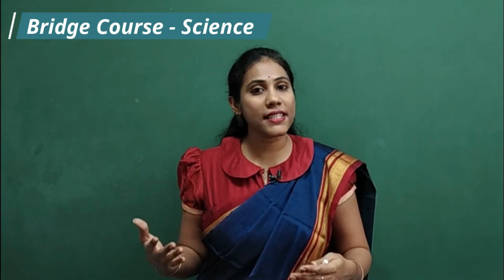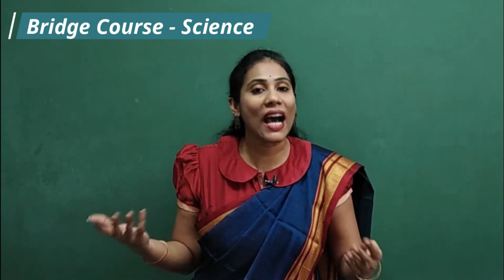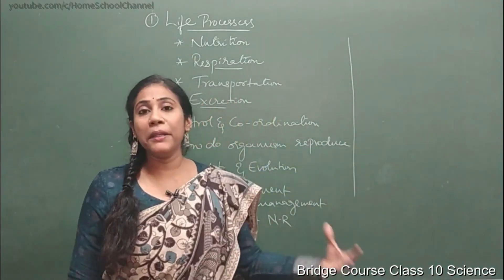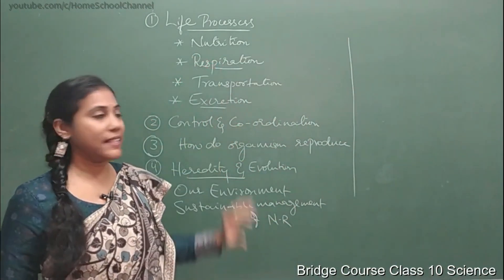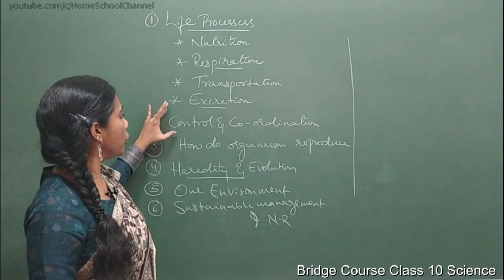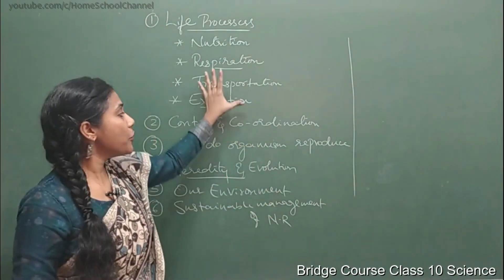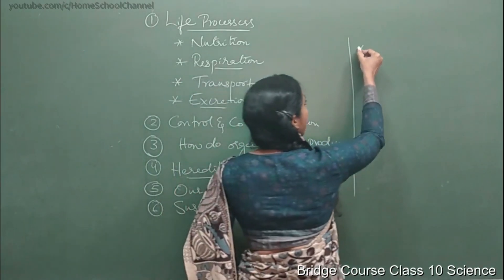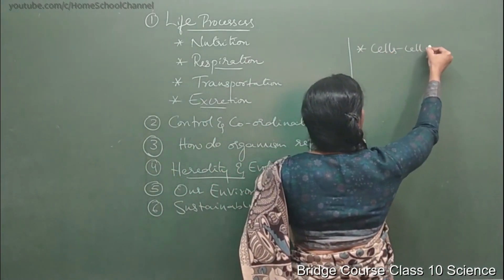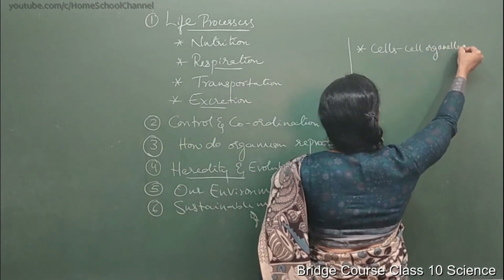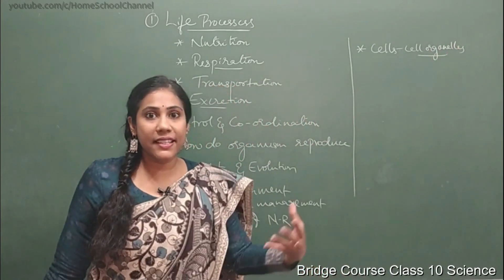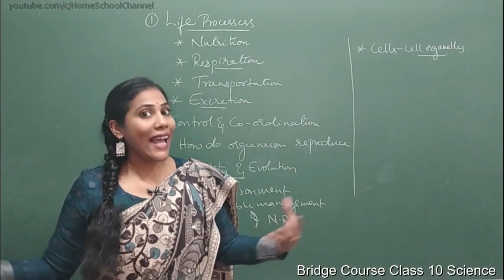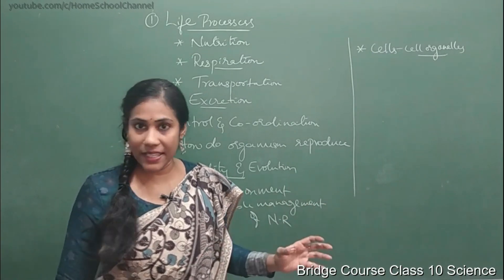How well you understand a concept always depends on how good you are at your basics. I am going to teach the basics needed to understand life processes, control and coordination, how do organisms reproduce, and heredity and evolution. These four biology chapters need certain basics. I will cover cells and cell organelles, which you studied in class 9 — revising which parts of the cell to focus on and what to remember about cells and cell organelles.